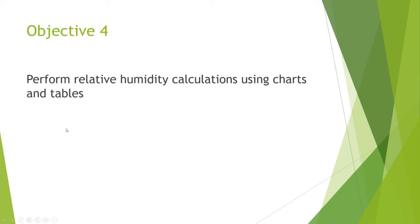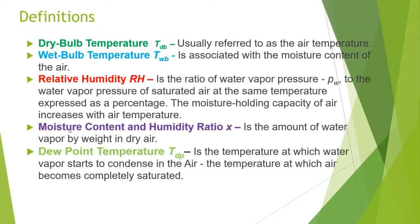Moving to objective four: how to use the psychrometric chart and tables. The next section can be confusing, but the process itself is relatively simple. We are not concerned with all the information on the chart — our focus is on wet bulb temperature, dry bulb temperature, relative humidity, and dew point, as those are the focus of this ILM.